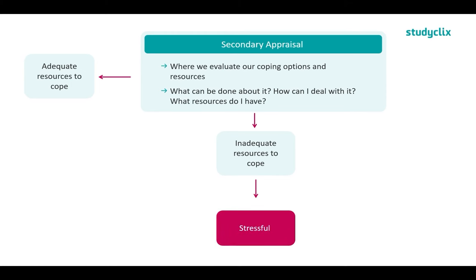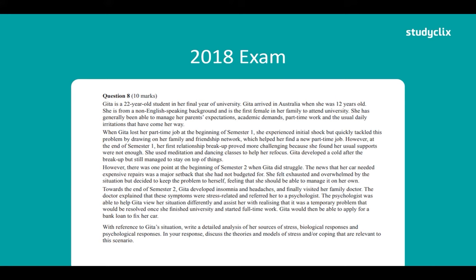So those are the stages of the model. Now let's apply this to an example from the 2018 exam. The question asks: with reference to Jeter's situation, write a detailed analysis of her sources of stress, biological response, and psychological response, discussing relevant theories and models of stress and coping. This model covers the psychological responses, so we're going to focus on that part. I'll highlight the different things relevant to her psychological responses.